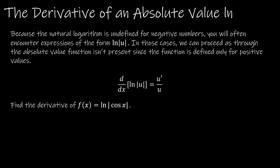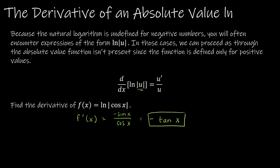We're going to finish with the derivative of an absolute value natural log function. Because the natural log is undefined for negative numbers, taking the natural log of the absolute value of u means we won't have any negative numbers inside, so we tackle this the same way as just the natural log of u. For instance, with ln|cos(x)|: to find f prime of x, I use 1 over cos(x) times the derivative of cos(x). The derivative of cos(x) is negative sine x, so we get negative sine x over cos(x). Since sine over cosine is tangent, the derivative is negative tangent of x.